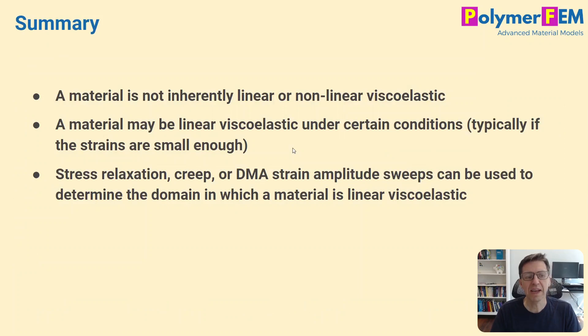So to summarize, a material is not really inherently linear or nonlinear viscoelastic. It may behave in a linear viscoelastic way under certain conditions, if the strains are small, for example. And there are these types of stress relaxation, creep, or DMA strain sweep experiments that you can use to determine if your material will behave in a linear viscoelastic way before you start selecting and calibrating material models. If you have any questions on this, you can ask them below.